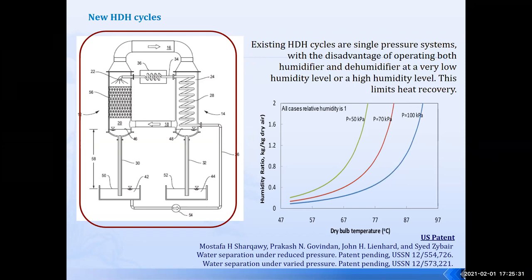Moving in order, what we see here are some ideas that were patented for HDH cycles. The one in front of us seems like a natural thing to think of because for thermal desalination systems, the expectation is to run the system at lower pressure. We talked about MED and MSF — as you move from one stage to the next, we reduce the pressure because as pressure gets lower, the saturation temperature drops and you can have more vapor, or reach saturation conditions at lower temperature.